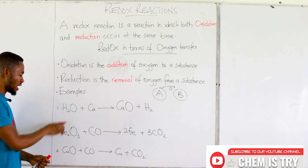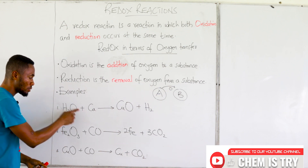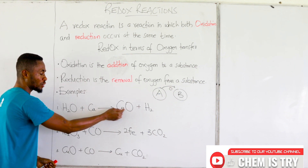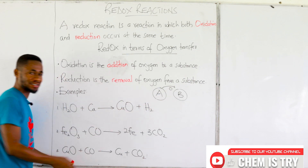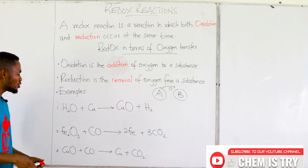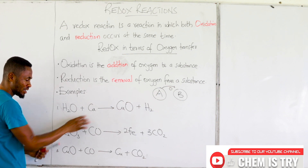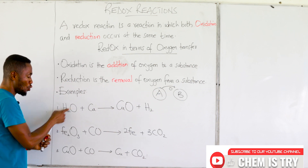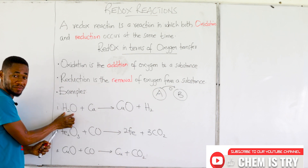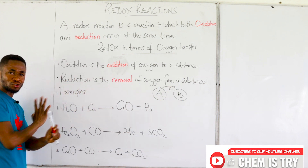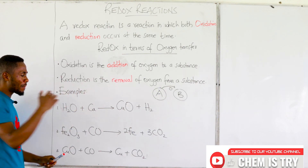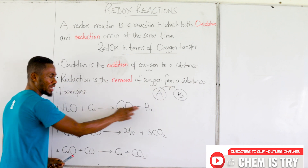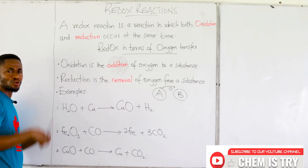In the first example, we have H₂O (water) combining with copper to produce copper(II) oxide and hydrogen gas. At the reactant side, water has oxygen — oxygen is attached to hydrogen — and copper is alone with no oxygen. But at the product side, copper now has oxygen and hydrogen has no oxygen.